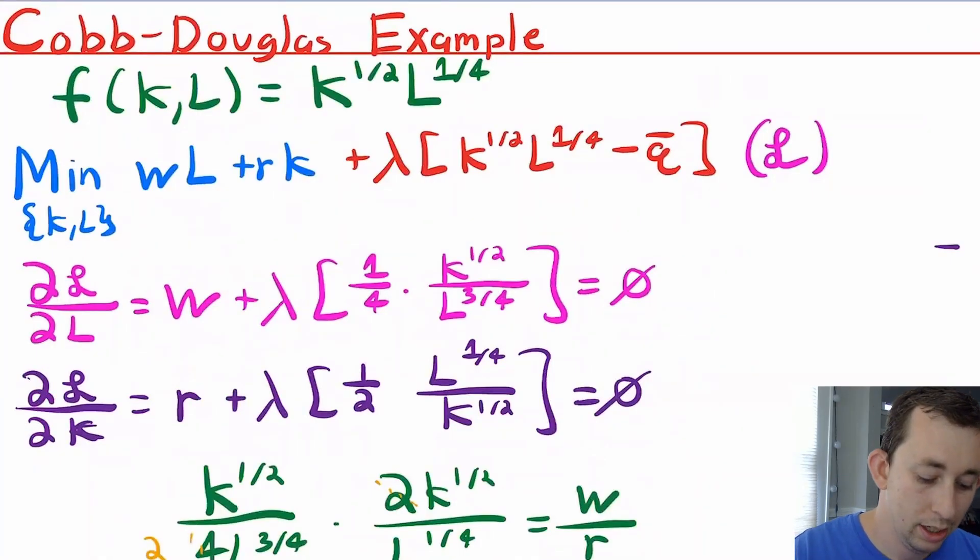Let's use Cobb-Douglas. My production function is just going to be K to the one half L to the one fourth, just to give it decreasing returns to scale. Remember that when we're doing cost minimization, we can do cost minimization for any type of production function, but we can only do profit maximization for decreasing returns to scale production functions.